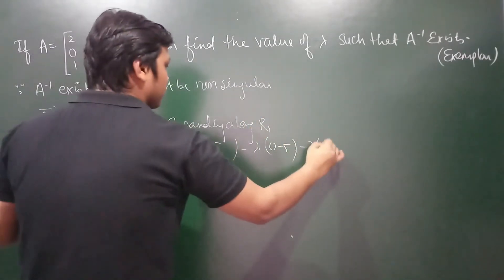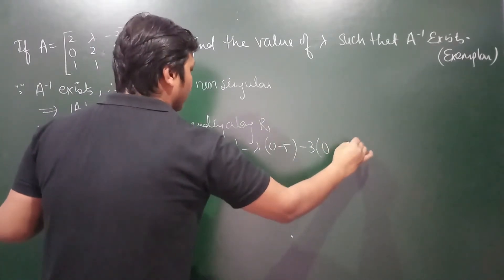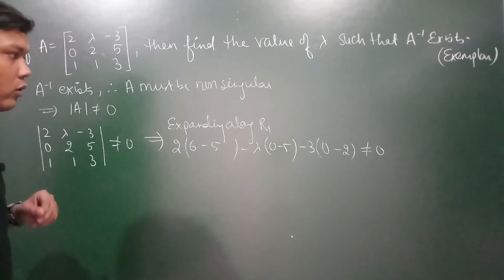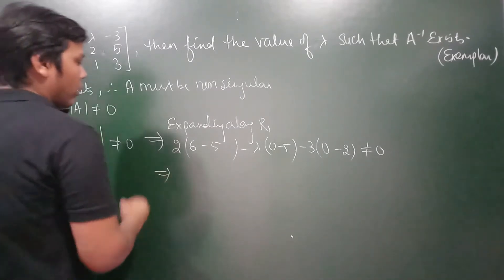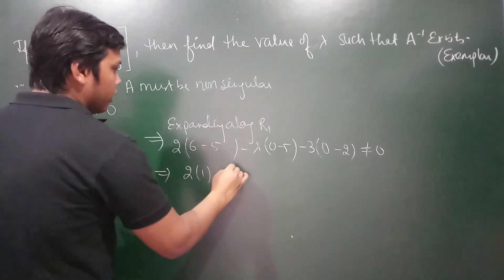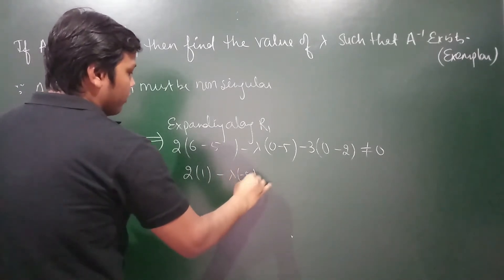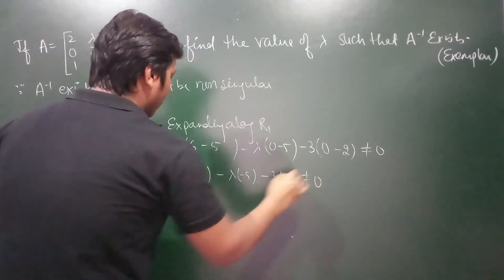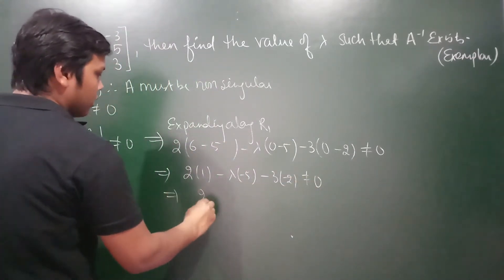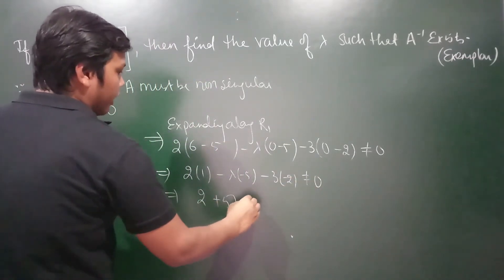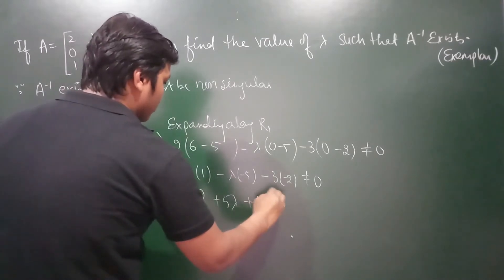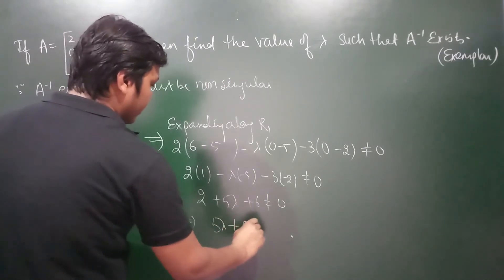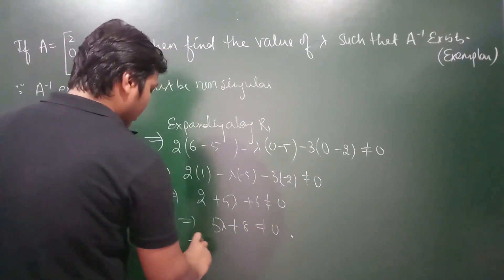यह हो जाएगा 0 and minus 2, is not equal to 0 because the determinant is not equal to 0. So यह हमें देगा: 2 times of 1, minus lambda times of minus 5, and minus 3 times of minus 2, should not be equal to 0 — which gives us 2 plus 5 lambda plus 6 should not be equal to 0.